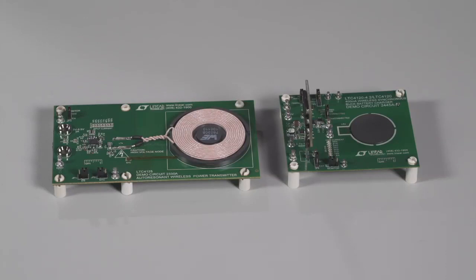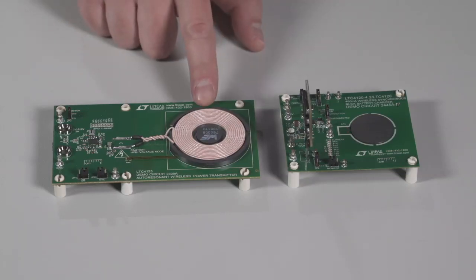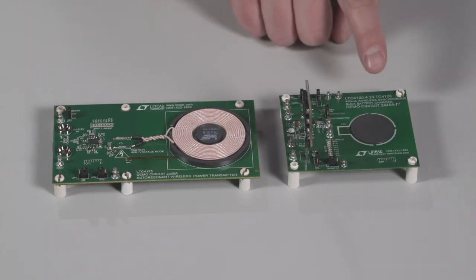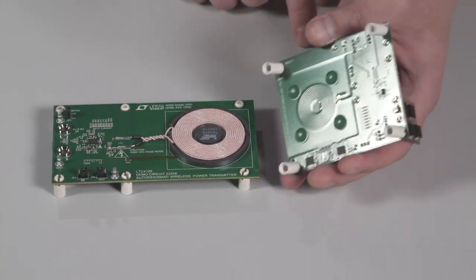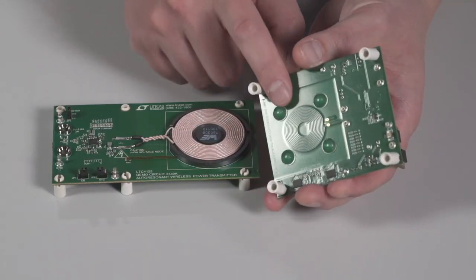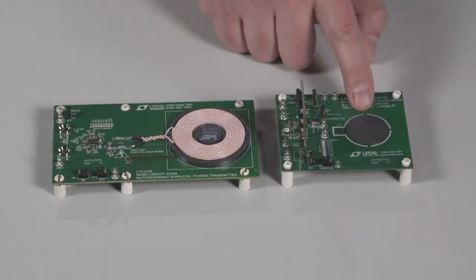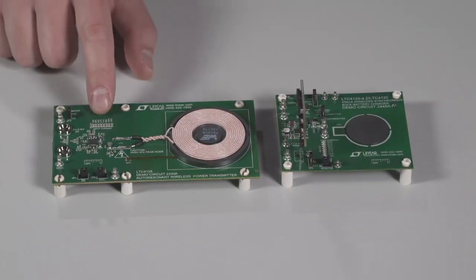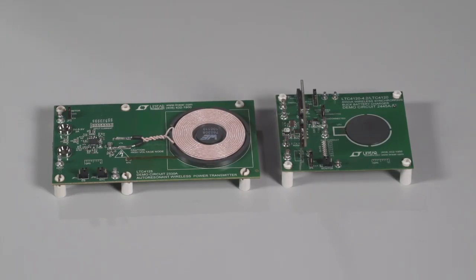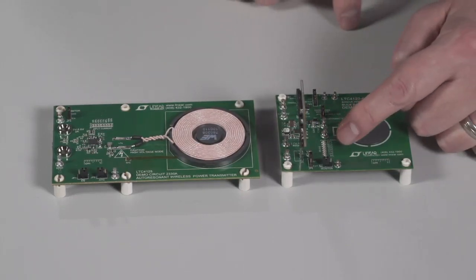Here, I have the combined LTC4125 transmitter plus LTC4120 receiver demonstration circuit set to charge a single lithium-ion battery at 400 milliamps. The transmit circuit uses a readily available standard 50 mm coil, while the receiver coil is integrated in a four-layer printed circuit board with a ferrite shield to improve coupling. The transmit demo circuit includes an 8-LED bar graph which indicates the input current. The receiver also has an 8-LED bar graph which indicates the battery charge current.